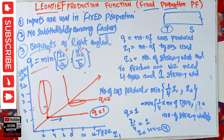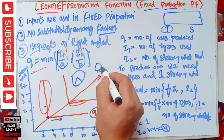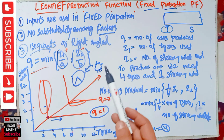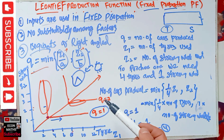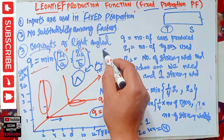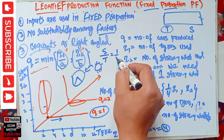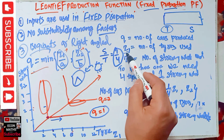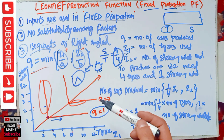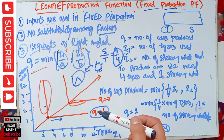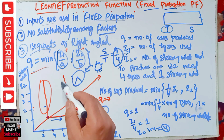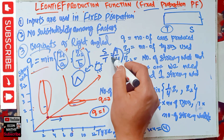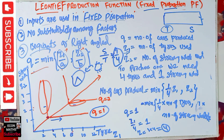To summarize: there is no substitutability among factors — we can't use steering wheels for tires or vice versa. Inputs are used in a fixed proportion; here the ratio was one steering wheel to four tires. Changing only one input will not increase production. To produce two cars, we multiply the whole ratio by two. Isoquants are right-angled.